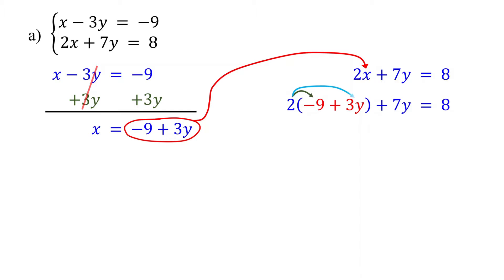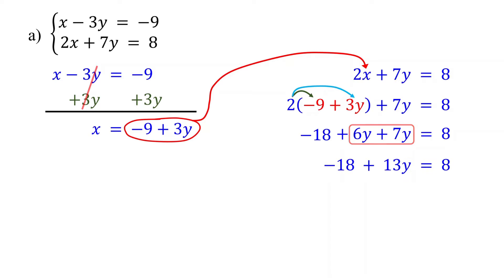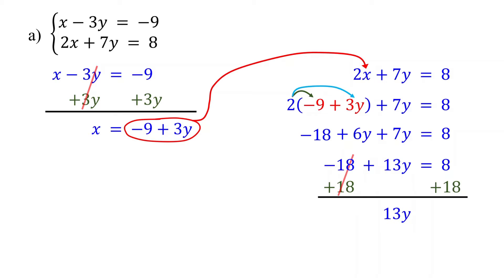First, let's distribute the 2. 2 times negative 9 is negative 18. 2 multiplied by 3y equals 6y. Then, combine like terms. 6y plus 7y equals 13y. Then, add 18 to both sides of the equation. On the left side, the 18s cancel each other out, leaving us with 13y. On the right side, 8 plus 18 is 26.